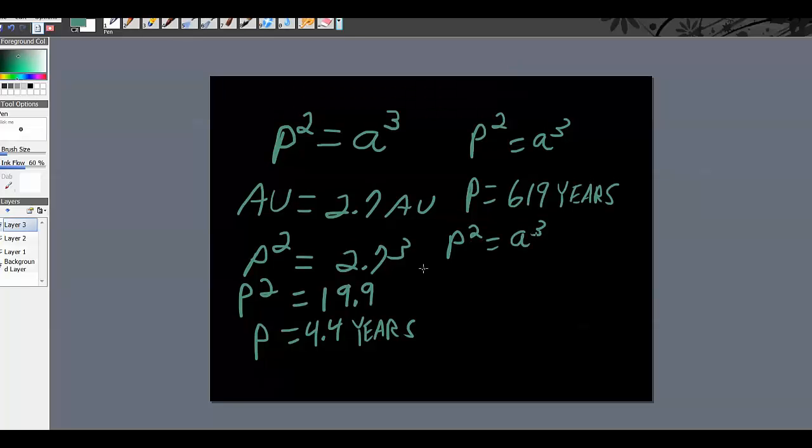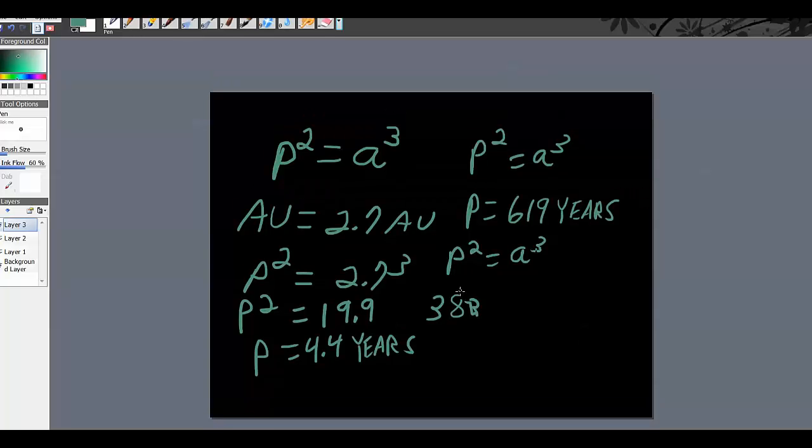So we can square 619. And you should be able to do that on your calculator. 619 squared. And that's about 383,161. 383,161 equals A cubed.